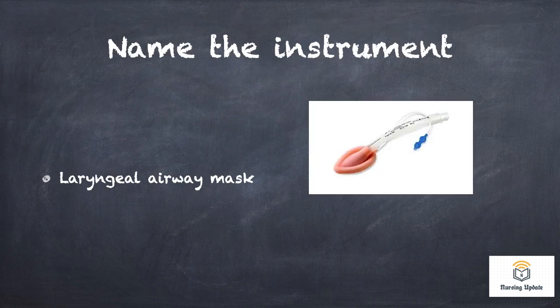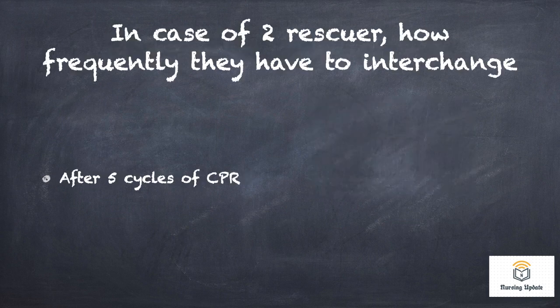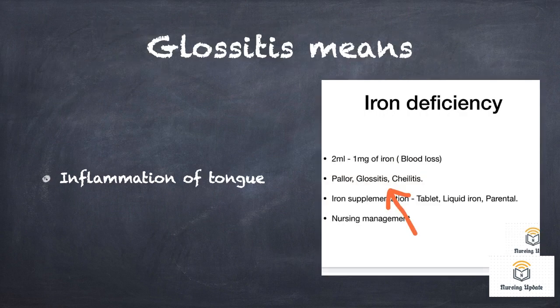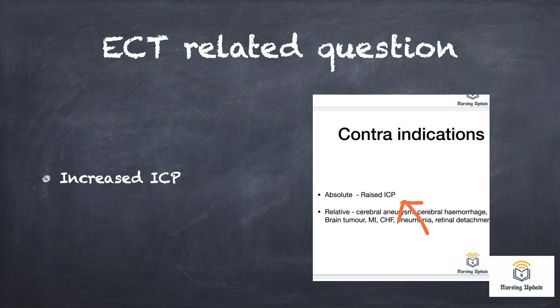Laryngeal airway mask — this is an image-based question. Two rescuers interchange after five cycles of CPR. Total WBC count — what it indicates: infection. What is meant by glossitis? Inflammation of the tongue.